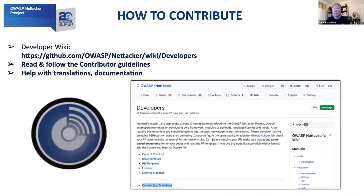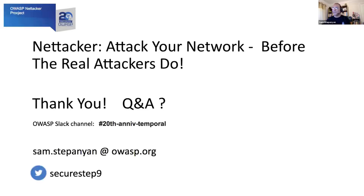Just like all OWASP projects, it is open source, so we welcome contributions. If you want to contribute, please check out the developer wiki on the documentation page, read and follow the contributor guidelines. If you know Python, you can help with coding; if you know YAML, you can help with vulnerability modules. You can also help with translations and documentation if you want to contribute in a non-technical way. So that's it about NetHacker — please use it to attack your own network before the real attackers do. I'm now ready to take questions via the OWASP Slack channel for this track: 20th Anniversary Temporal. You can also contact me via email or via Twitter at SecureStep9. Thank you.